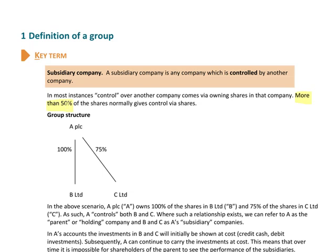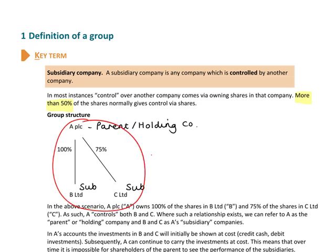Here is a diagram of a group structure with three companies. Company A we call the parent, or sometimes the holding company — both terms mean exactly the same thing. B and C are both subsidiary companies because A owns enough shares to control them: we own 100% of the shares in B and 75% of the shares in C. Together these three companies are what we call a group of companies.